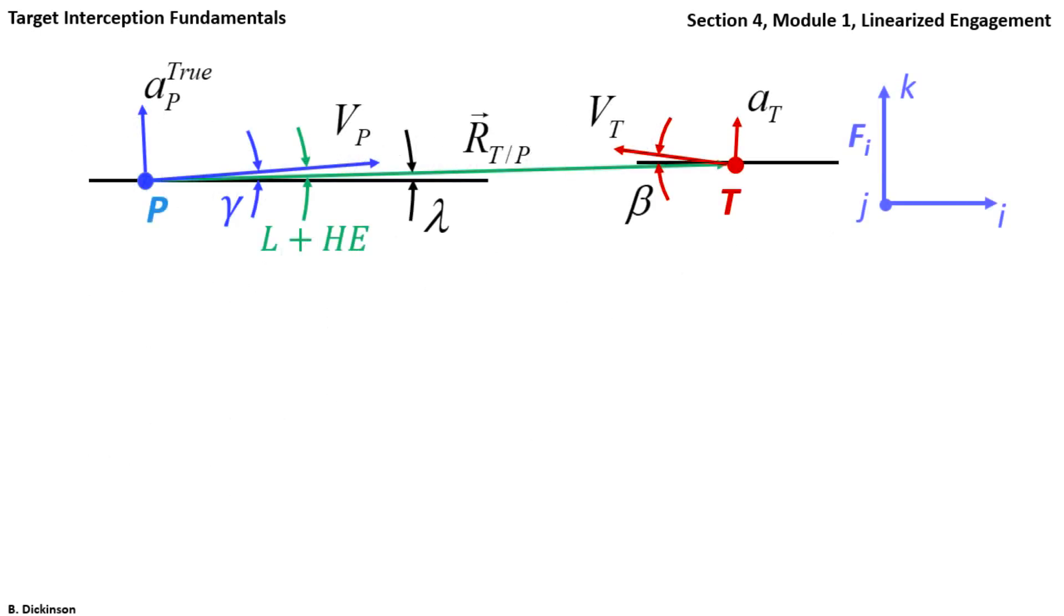So, now that we've developed some linearized equations, let's reflect on what the geometry of the engagement is. So, here is still technically the two-dimensional engagement. And we have kinematics in the vertical and horizontal directions.